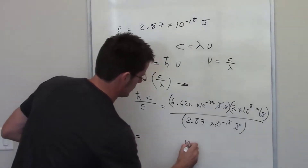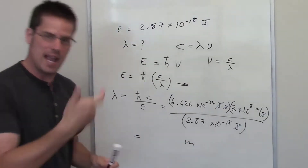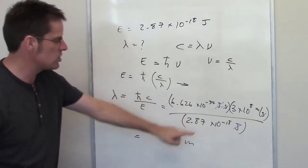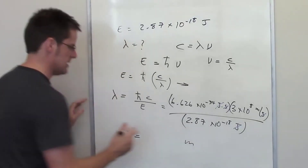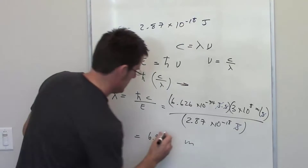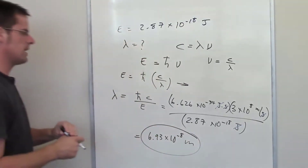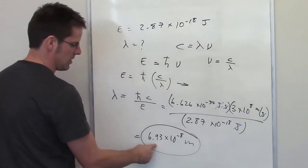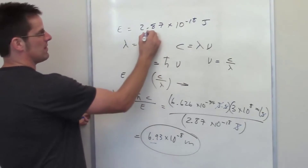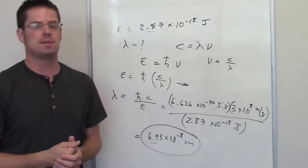We ask ourselves: is meters a proper unit for wavelength? It's a length, and meters is a unit of length, so yes. Plug that into your calculator and the answer is 6.93 times 10 to the negative 8th meters. Also worth noting: the number of significant figures used here is 3, which lines up with the value we've been given that has the fewest significant figures, which also happens to be 3.